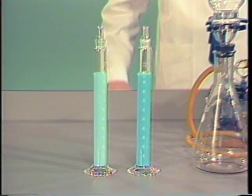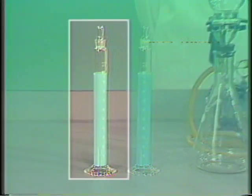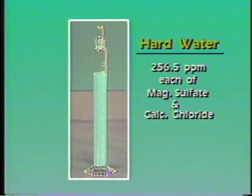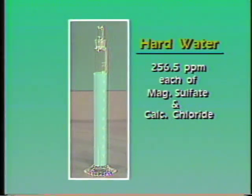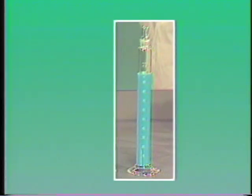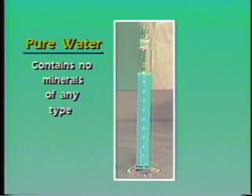We have prepared two 10% emulsions with a chemical emulsion concentrate. The emulsion sample on your left was prepared in a water containing 256.5 parts per million each of magnesium sulfate and calcium chloride, and is the equivalent of 30 grains per gallon hardness. The emulsion sample on your right was prepared in chemically pure water which contains no minerals of any type.